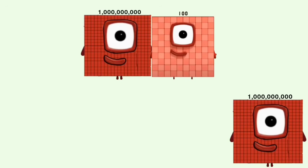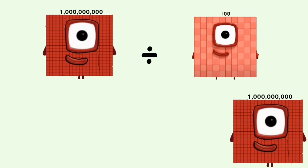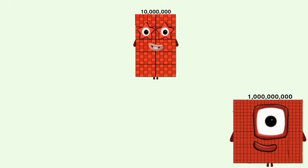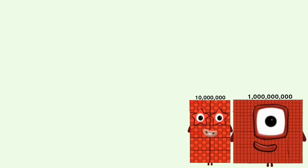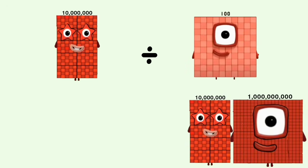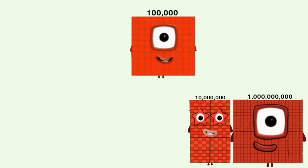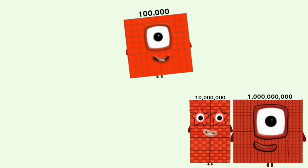1 billion divided by 100 equals 10 million. 10 million divided by 100 equals 100,000.